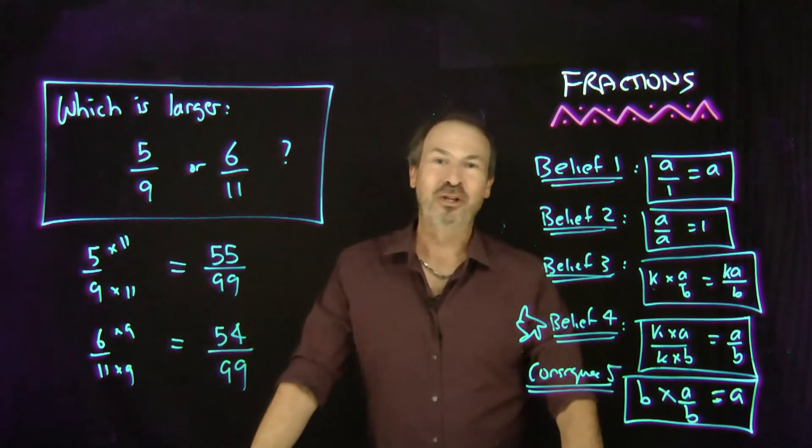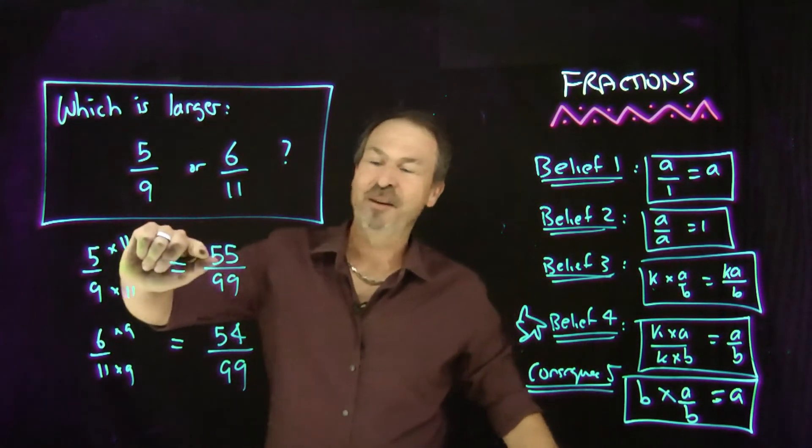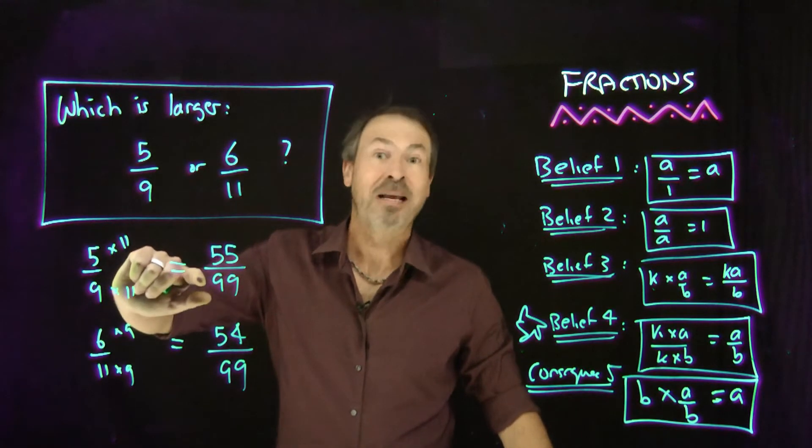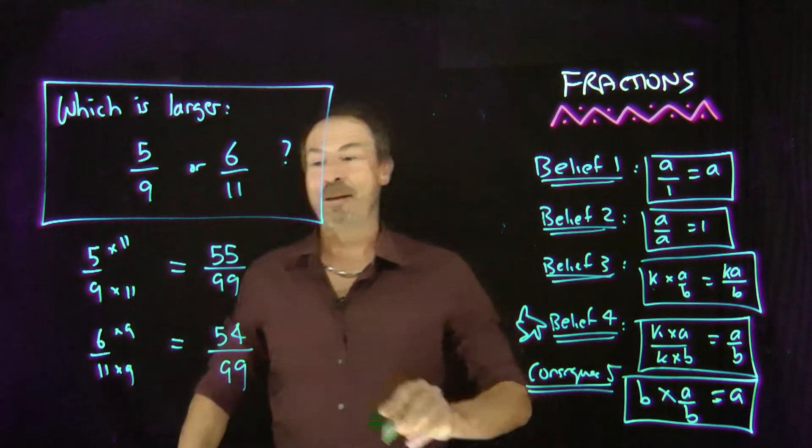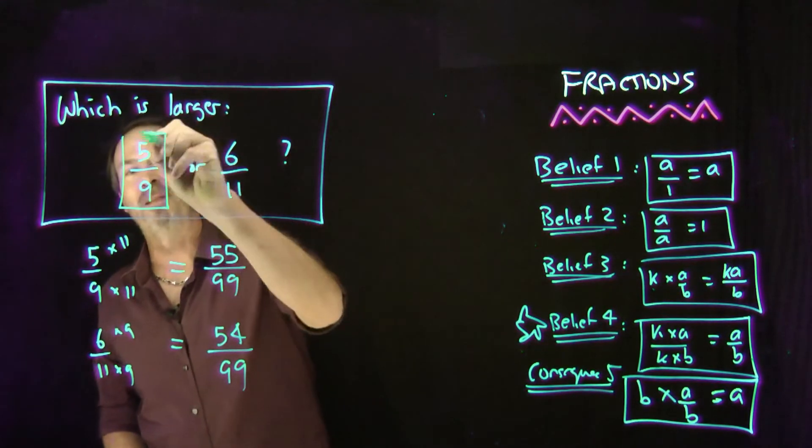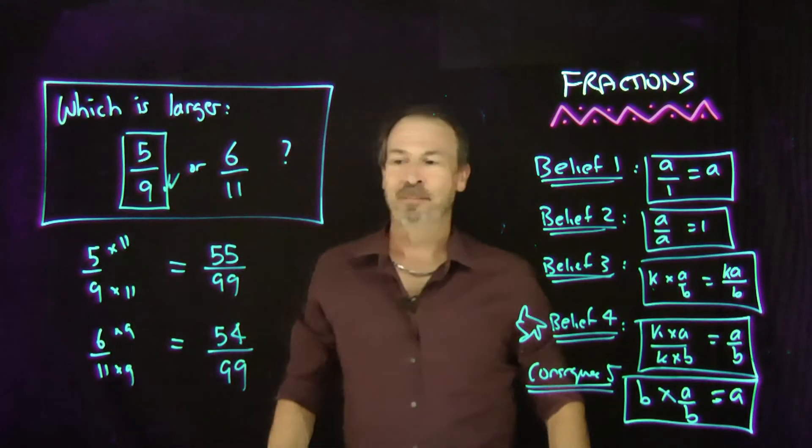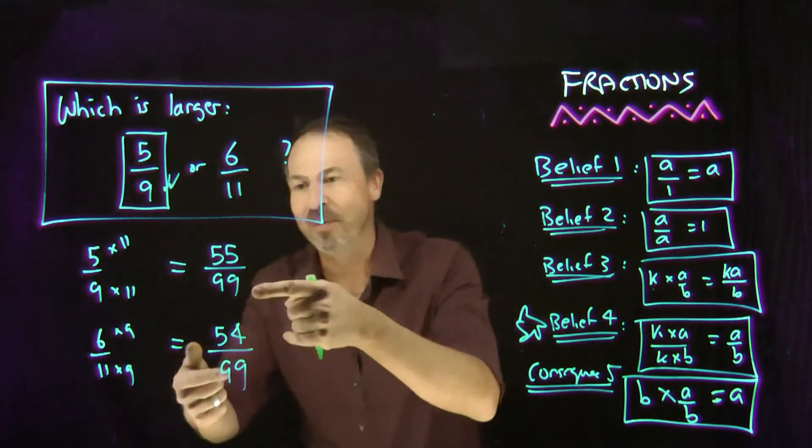And now it's clear which student gets more pie. Sharing 55 pies amongst 99 students is certainly more pie per student than 54 pies being shared amongst the 99. So that means this fraction is actually the bigger fraction. I did that by comparing the fractions by writing the bottom numbers the same.